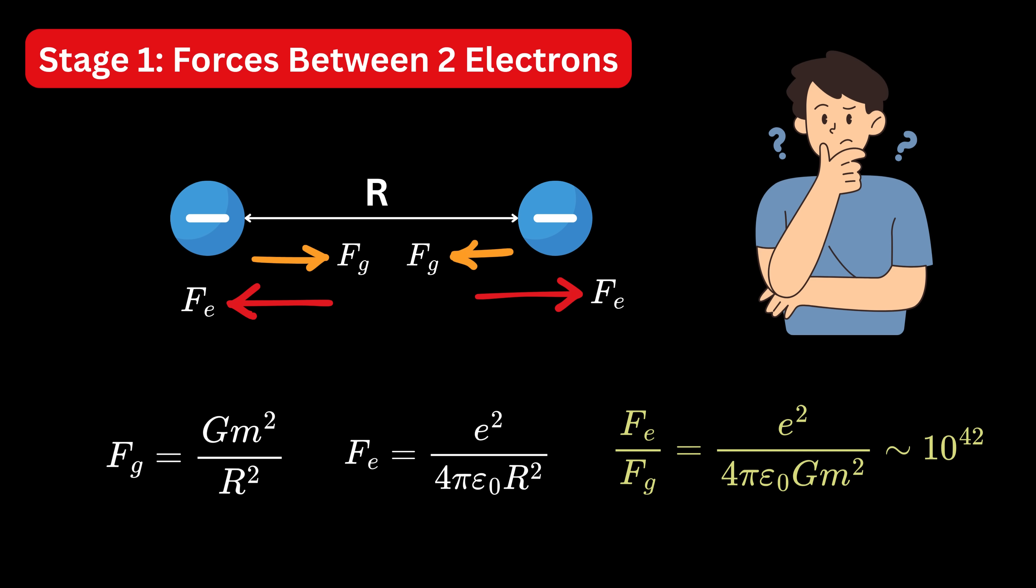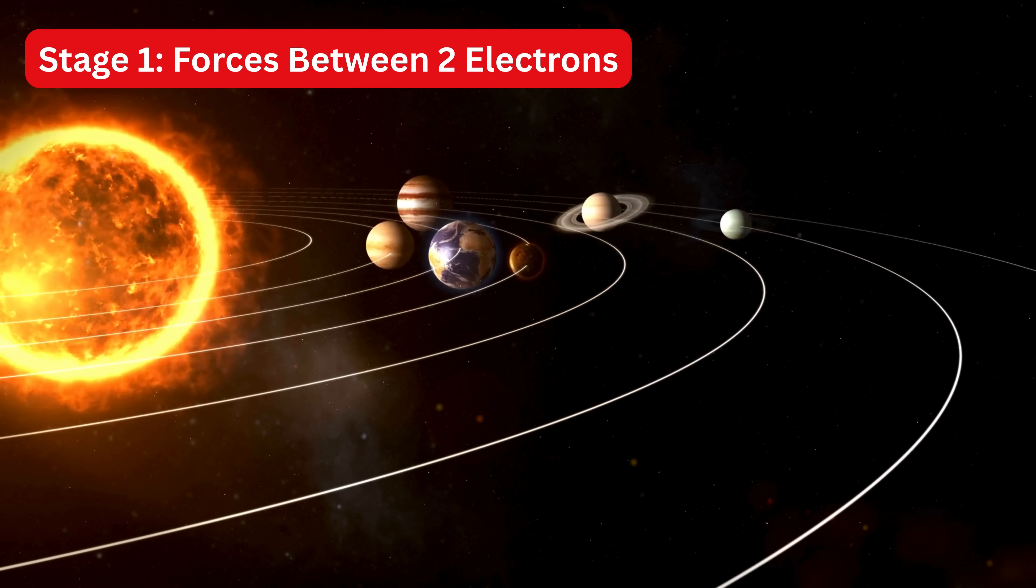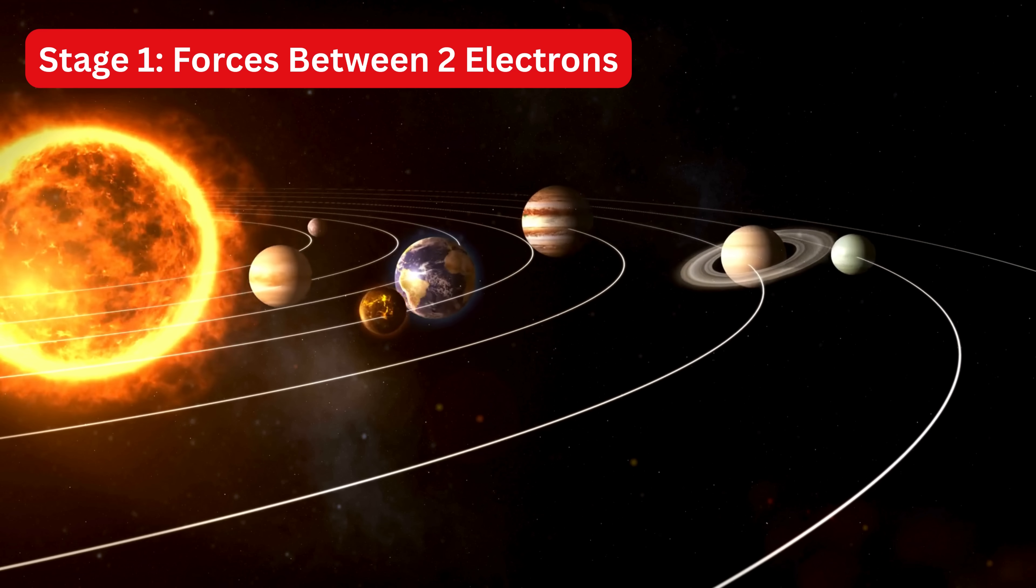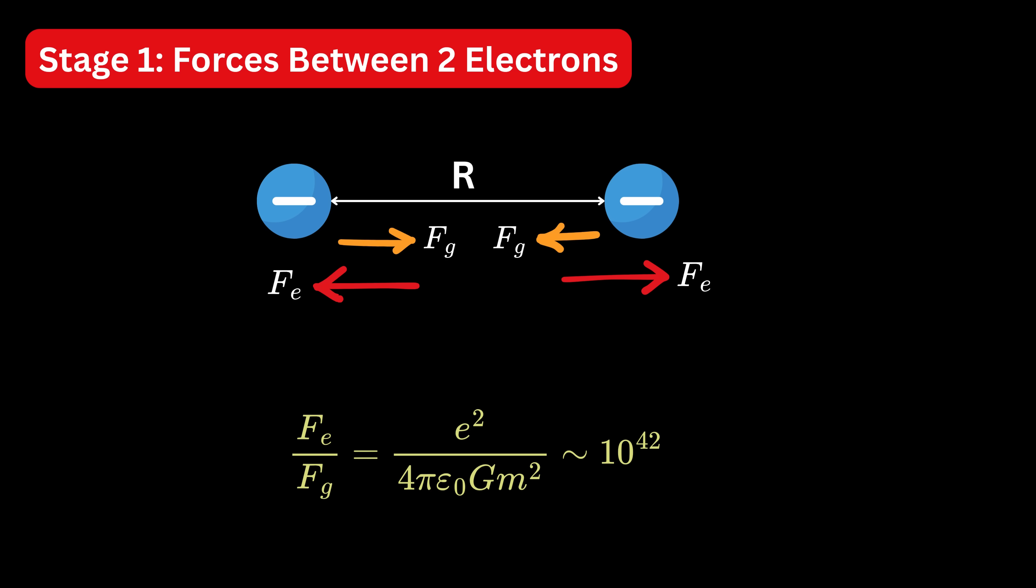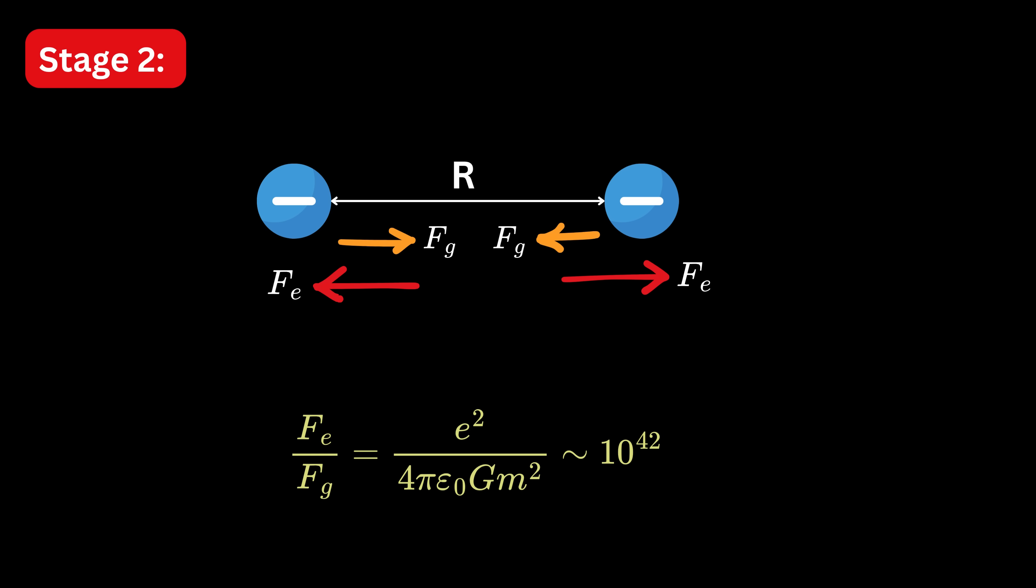But then you might wonder, if gravity is so weak, why does it dominate on big scales like planets and galaxies? That's because positive and negative charges cancel out overall, making electric effects vanish for large neutral objects. But gravity is always attractive and never cancels. That's why it becomes dominant when we zoom out. But at tiny scales, electric forces are highly dominant.